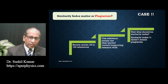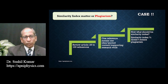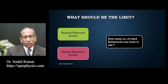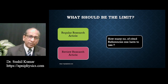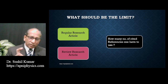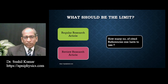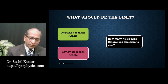What percentage of individual source should be present in a regular research article or a review article? If there are 20 references meaning 20 different ideas taken from different sources, and each contributes one percent or less than one percent, the overall similarity index again becomes 15 to 20 percent. We have to think about what should be the number of references in a regular research or review article and what should be the individual contribution to the similarity index before making any criteria for punishment.